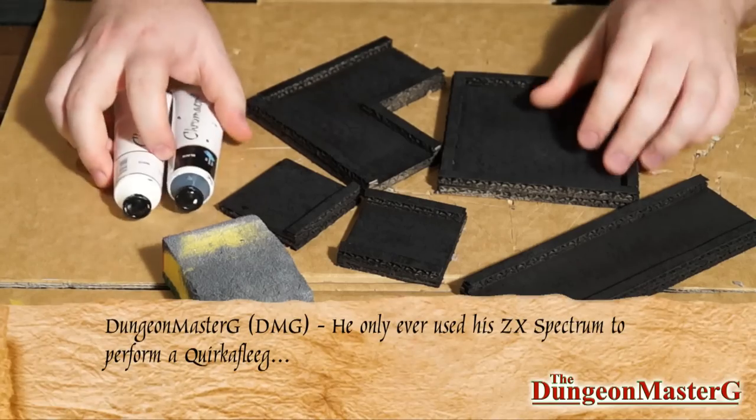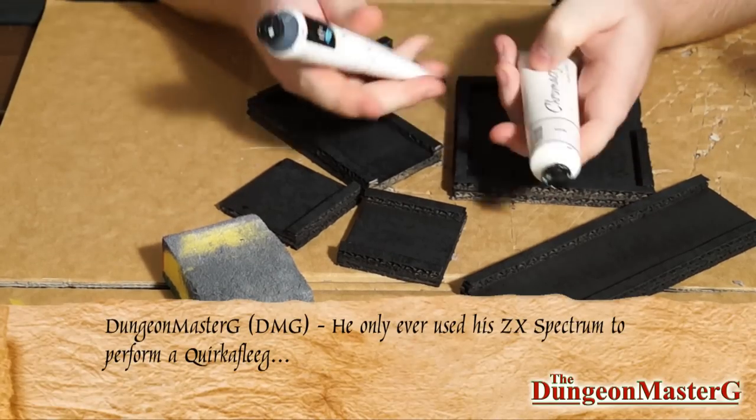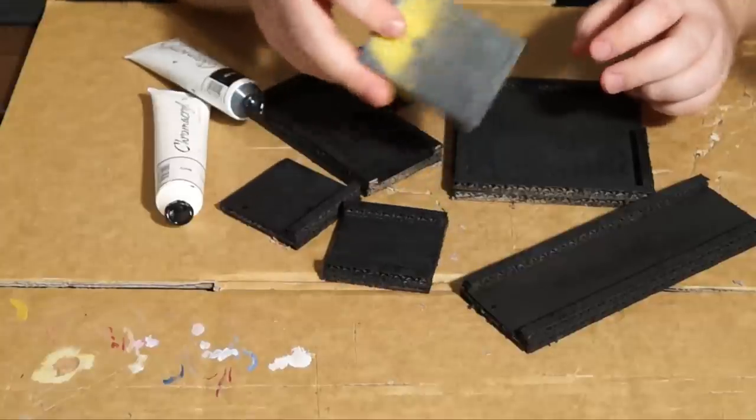Okay, so now we've got our tiles all undercoated and ready to go. We're going to now use our sponge and our black and white acrylic paint.